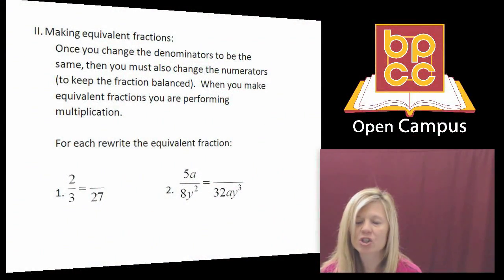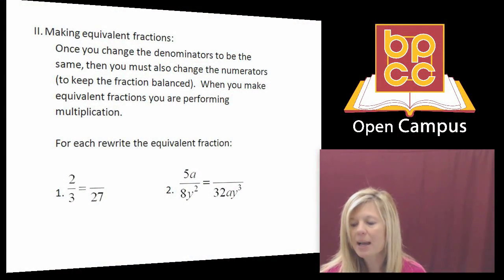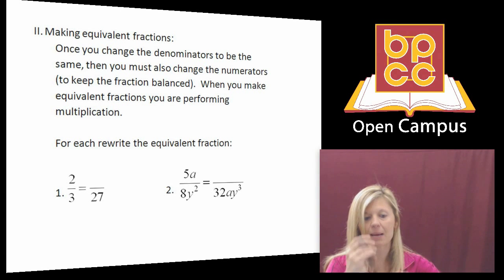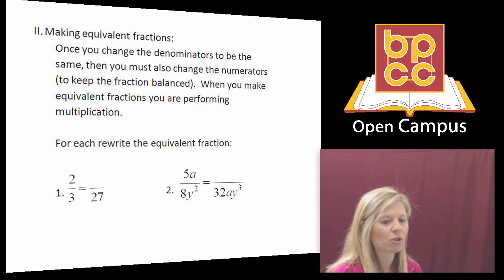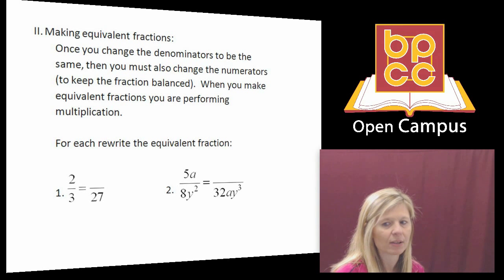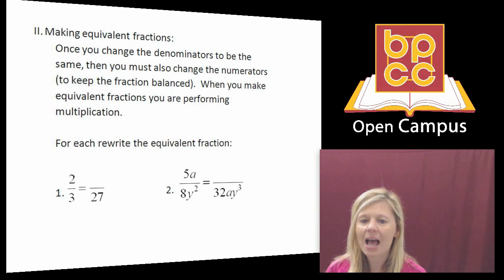So if you go to your class notes, I have up here the fraction two thirds and I want to make a fraction that's equivalent to it, which means it doesn't look the same but it has the same value. And I started this off by already giving you the new denominator, twenty-seven. So the rule is, how do you make equivalent fractions? How do you change two thirds to something over twenty-seven?